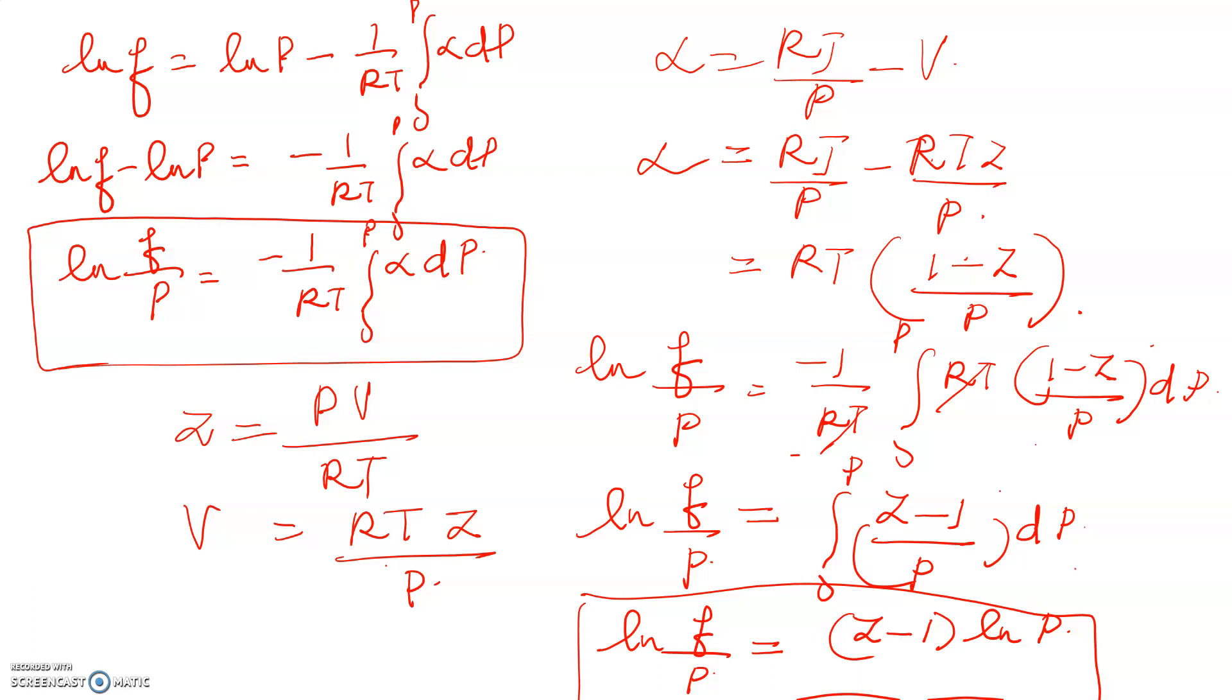Usually z is not a constant over the pressure range from 0 to P, and hence ln f by P equals integral 0 to P z minus 1 by P into dP cannot be integrated.